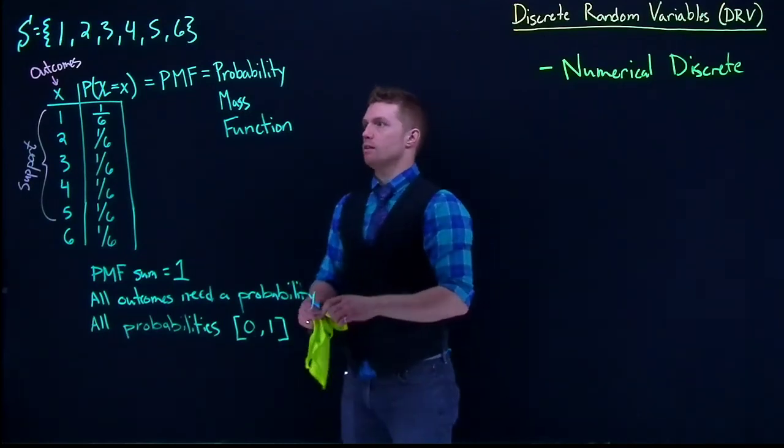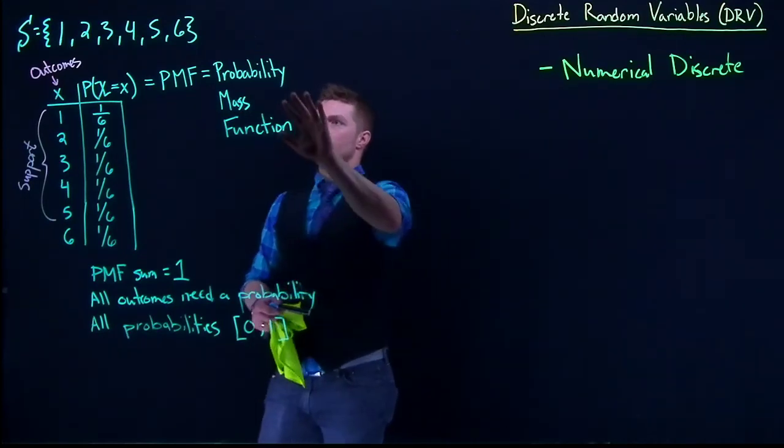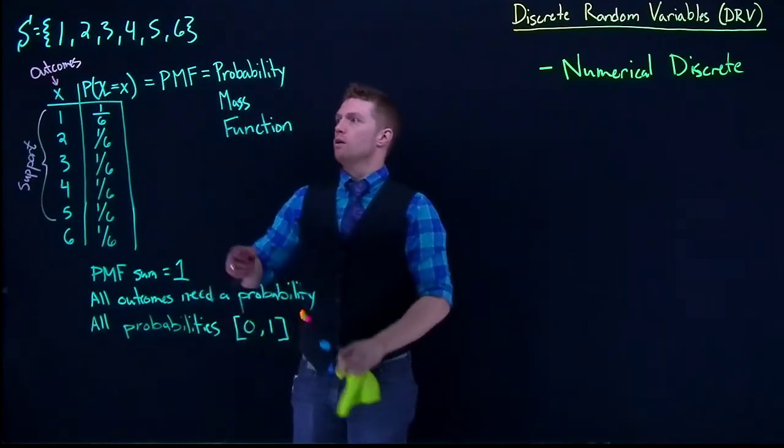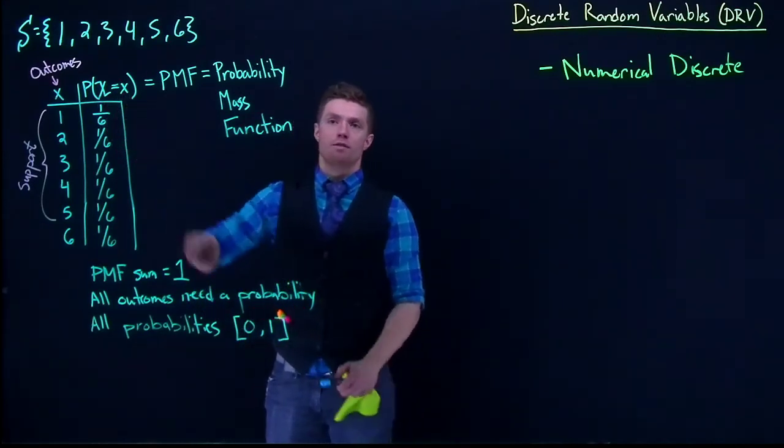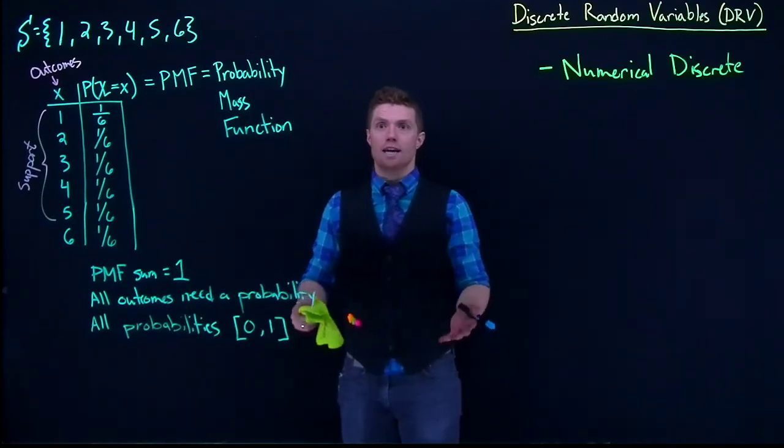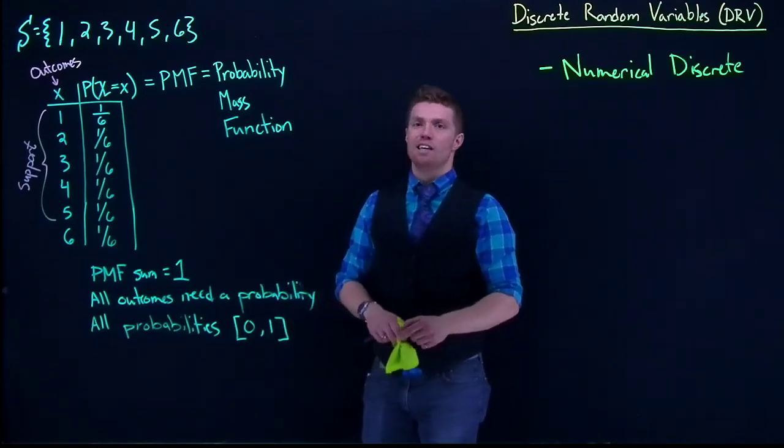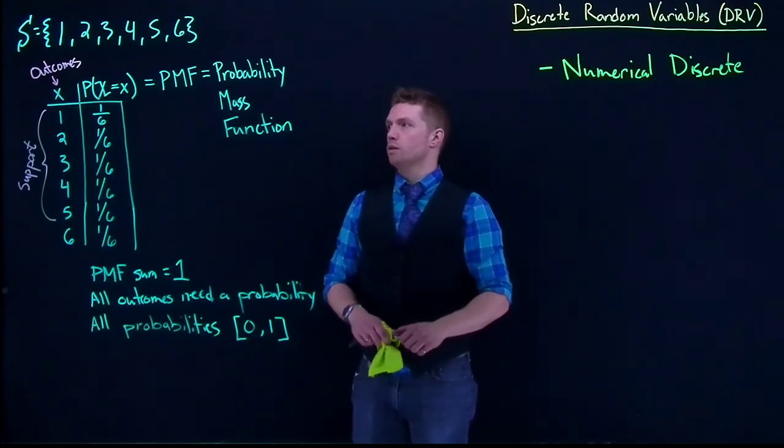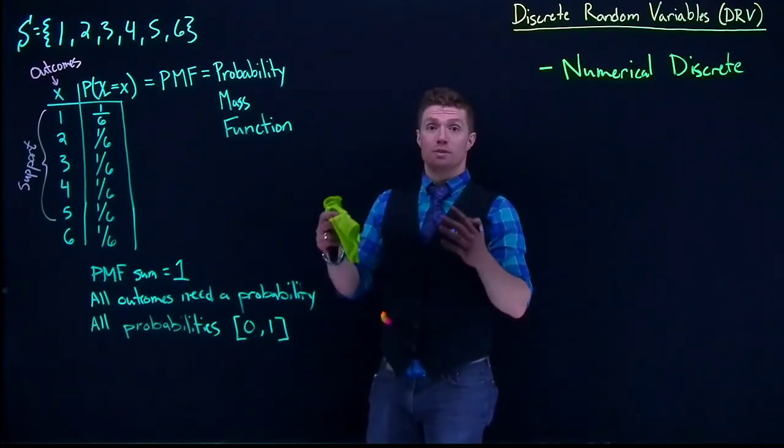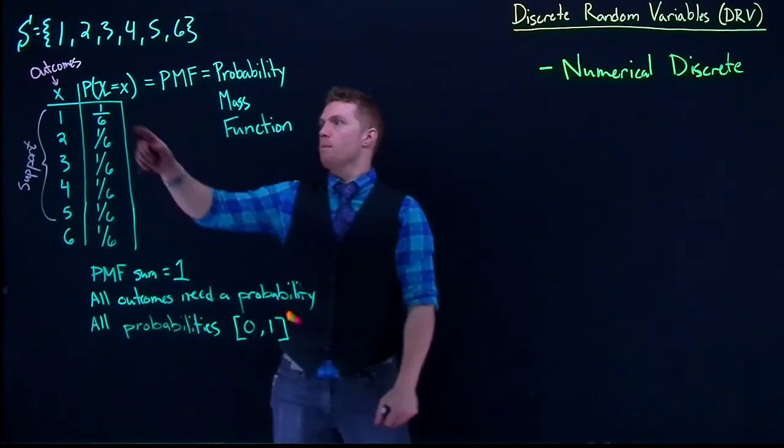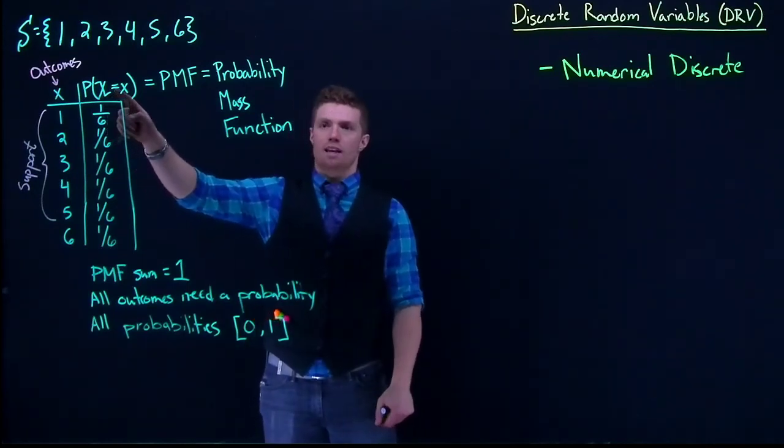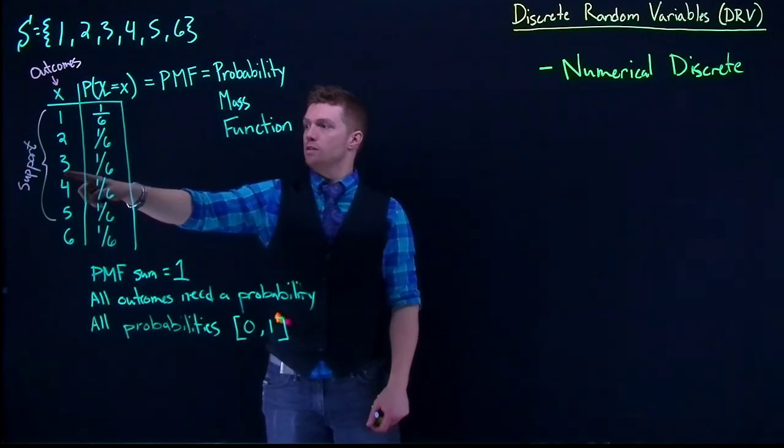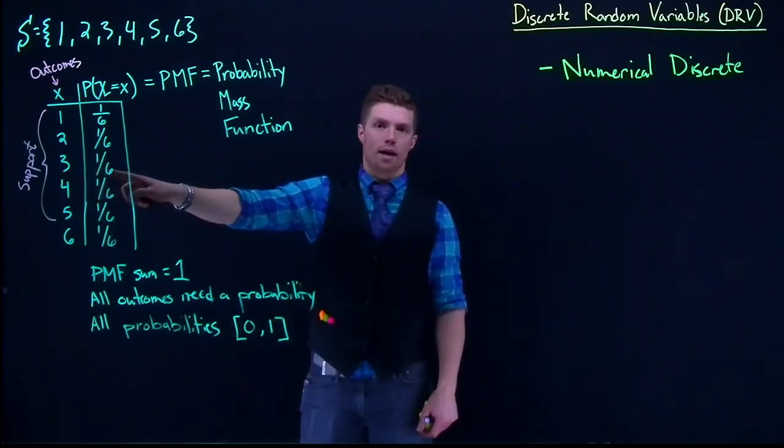I really wanted to make sure that we solidify this, that this probability mass function is saying, what's the probability that the random event, that we roll the dice, equals a specific member of the support? The probability that our dice roll, that capital X, is equal to the number 3, little x, is equal to 1/6.